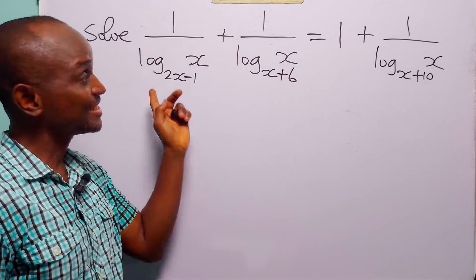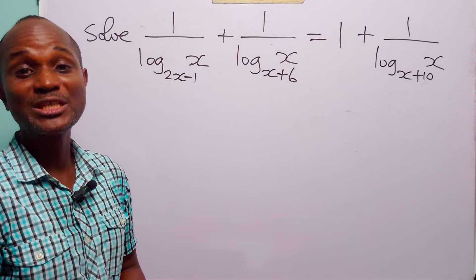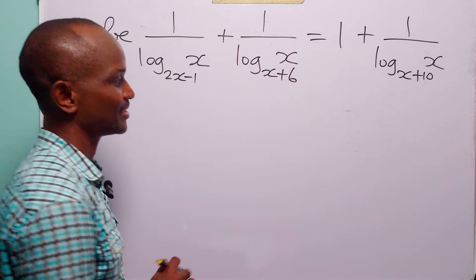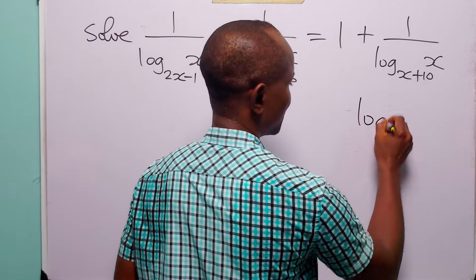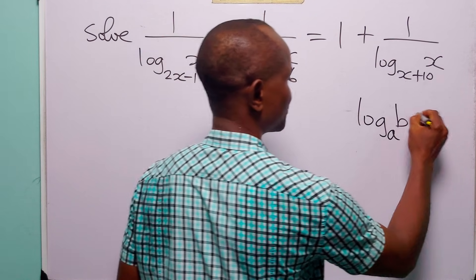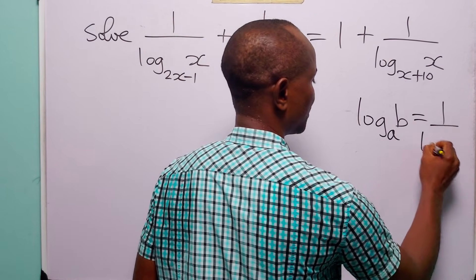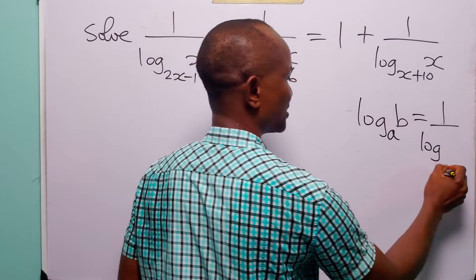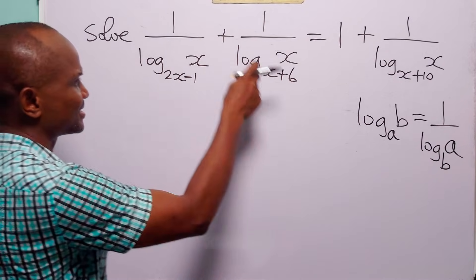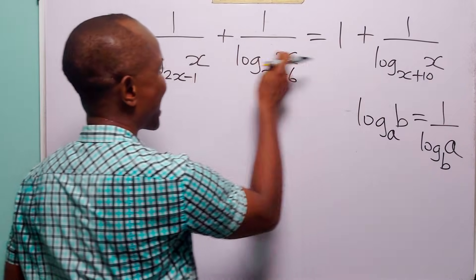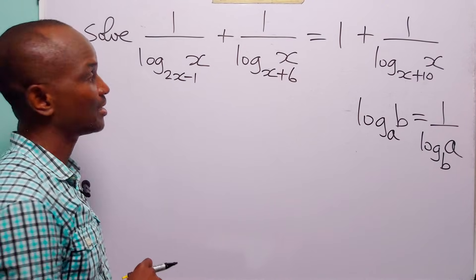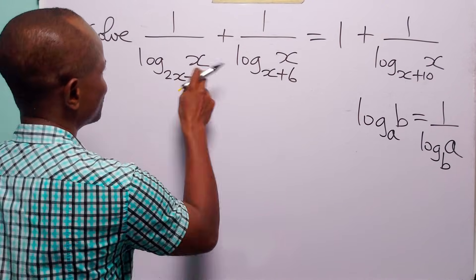Hello and welcome. The easiest way to solve this logarithmic equation is to remember the change of base identity: log to base a of b is equal to 1 over log to base b of a. Now since these three logarithms have the same argument, let us make that argument the base.